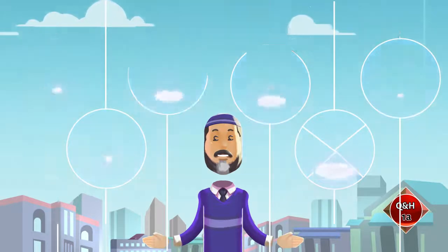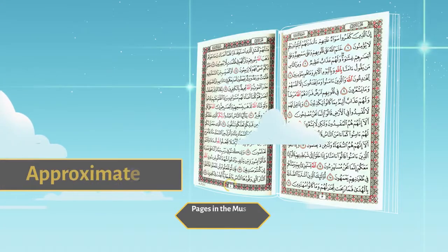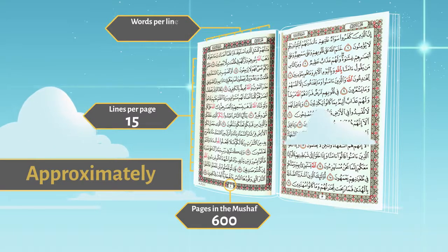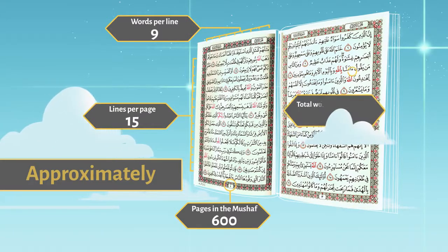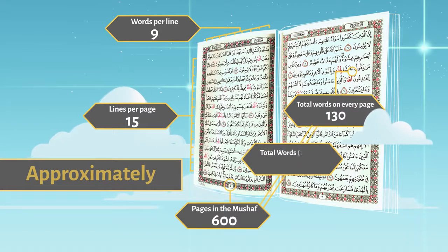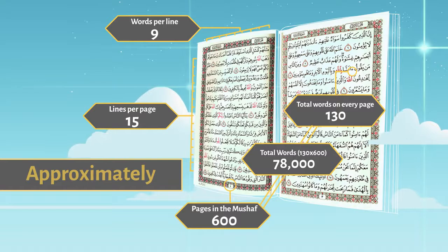In the most commonly printed Quran copy, pages in the Mus'haf are 600, lines per page are 15, words per line are 9, total words on every page are 130, and total words approximately are 78,000 in the Quran.